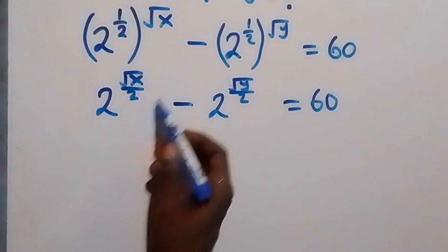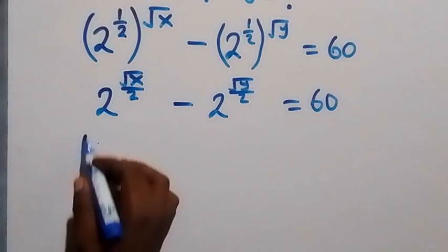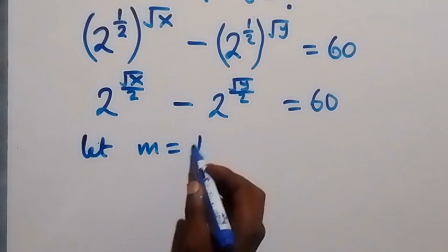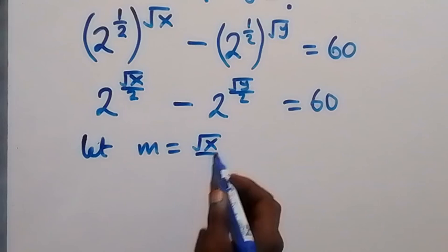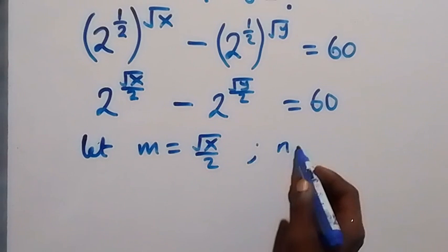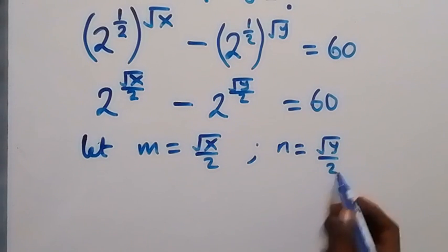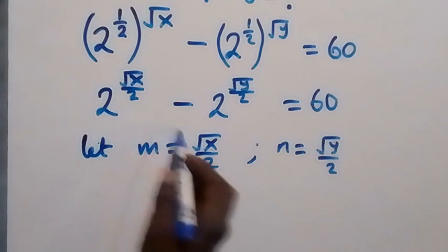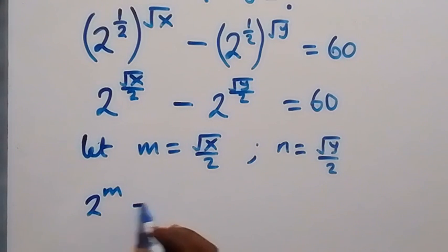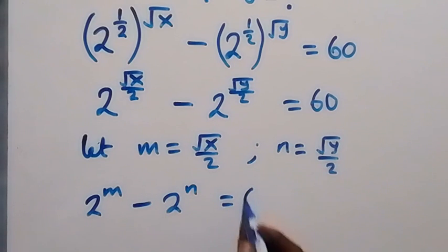In the next step, we can represent each power with a letter. Let m equal √x over 2, and let n equal √y over 2. So we can rewrite this equation as 2 raised to power m minus 2 raised to power n equals 60.